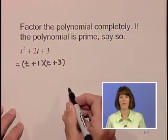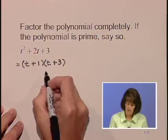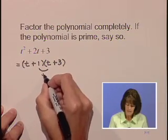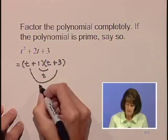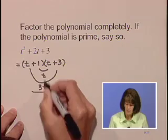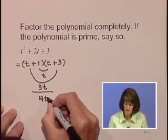Let's check our inner and outer products. With our inner term, we get 1t. Our outer product is 3t. If we sum those together, we get 4t.